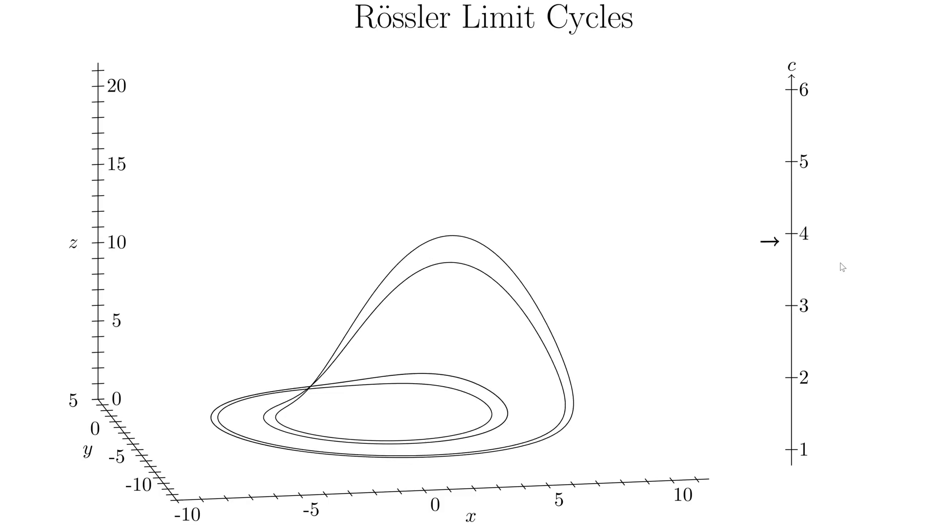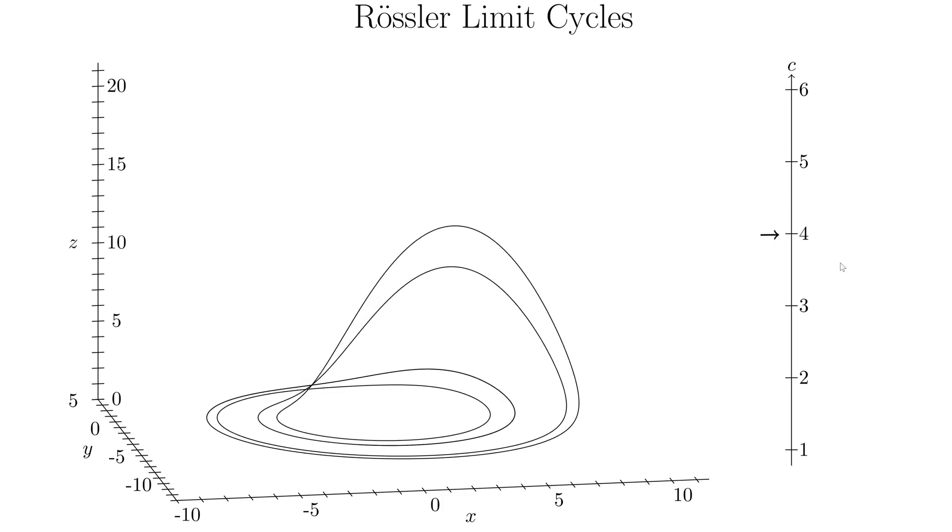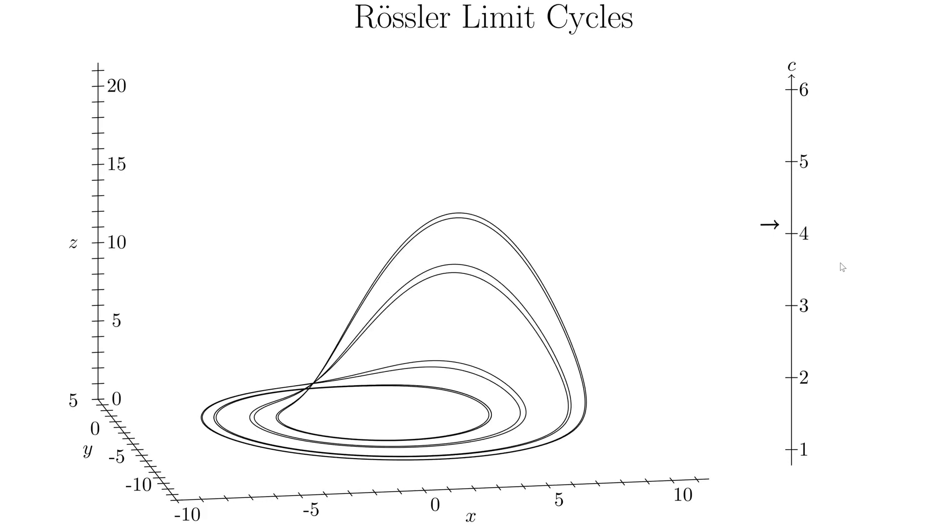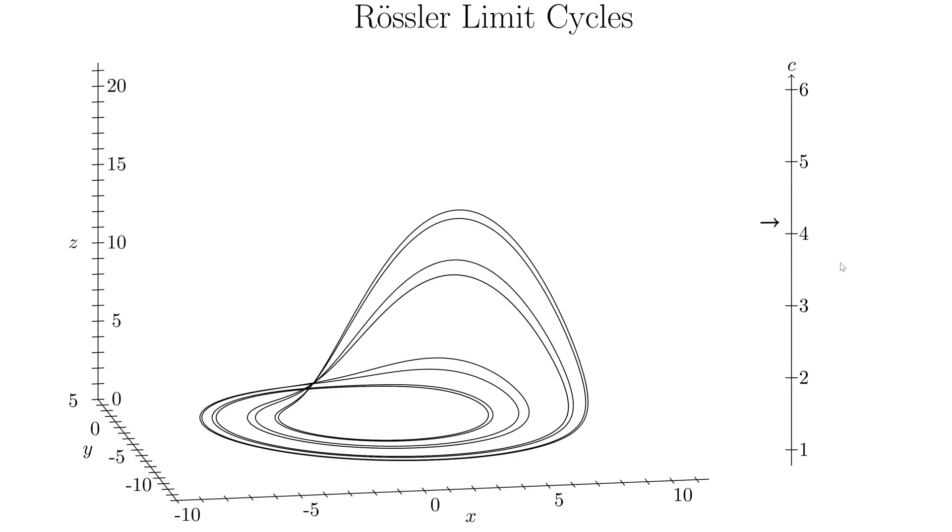And it's going to be at a specific parameter value. All of a sudden, it's just twice as long. And so I think we have to go a little bit above 4. We'll actually get another period doubling bifurcation. There we go. So now we have, it goes around 8 times. So 1, 2, 3, 4, 5, 6, 7, 8. But still one loop.